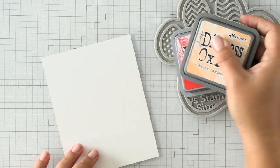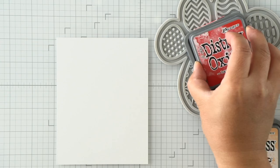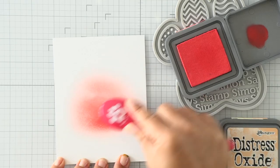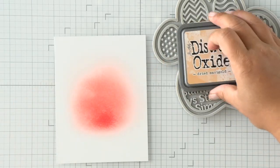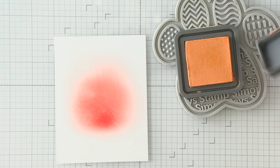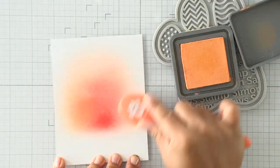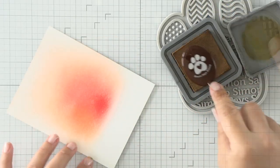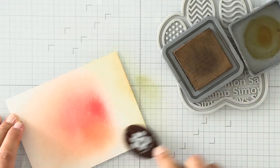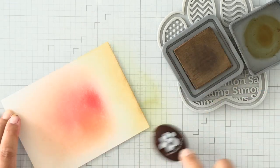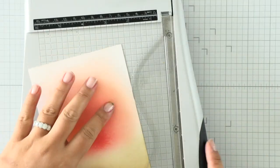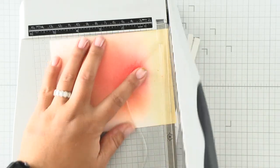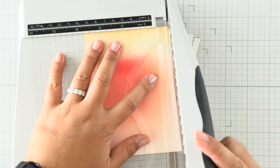Now we're going to work on the background. I wanted something really colorful but also muted at the same time, so we're using more distress oxide inks - this is Barn Door with Dried Marigold. It's not going to be perfect because we're going to be covering the majority of this panel up with the basket and all of the fall items that we colored. When I'm done with this, I'll go ahead and trim the sides to make it a little bit cleaner. I always do this because I do love a white border all around my card.